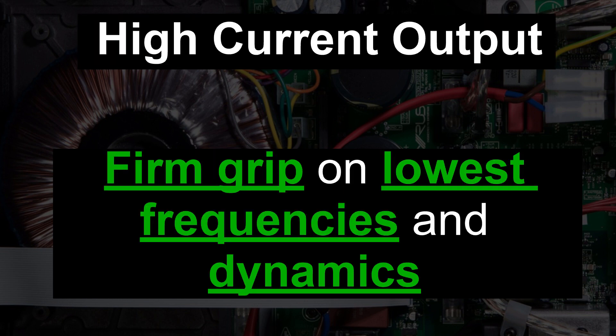This technology offers high current output which allows the amp to get a firm grip on lowest frequencies and dynamic bursts. This is especially useful for production of the kick drum or orchestral passages recorded with a lot of dynamics. In these cases the amp has to output very high current within a very short time.